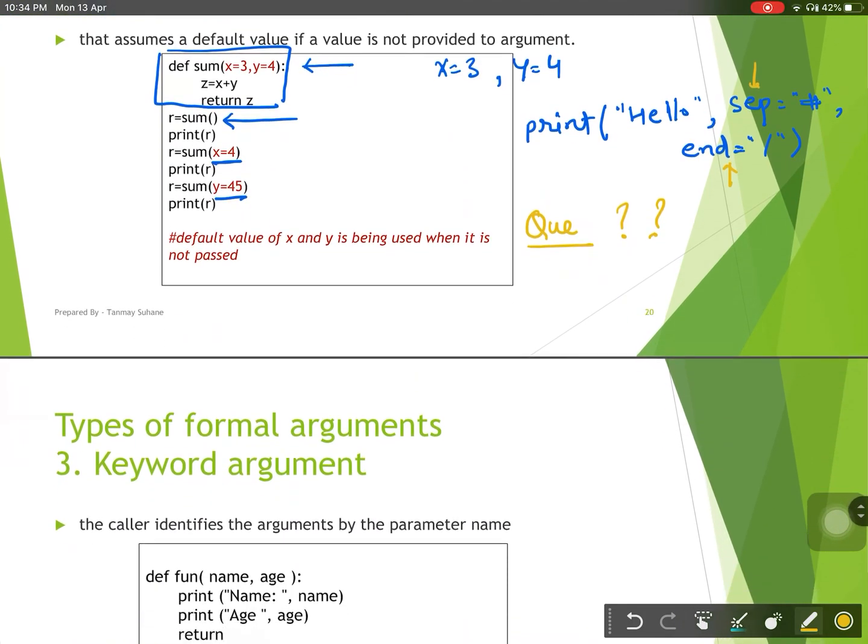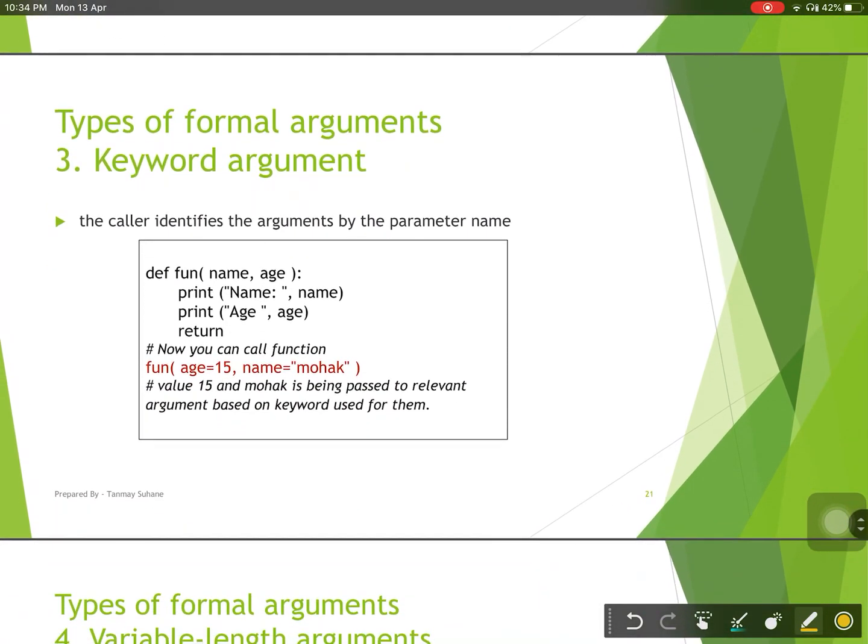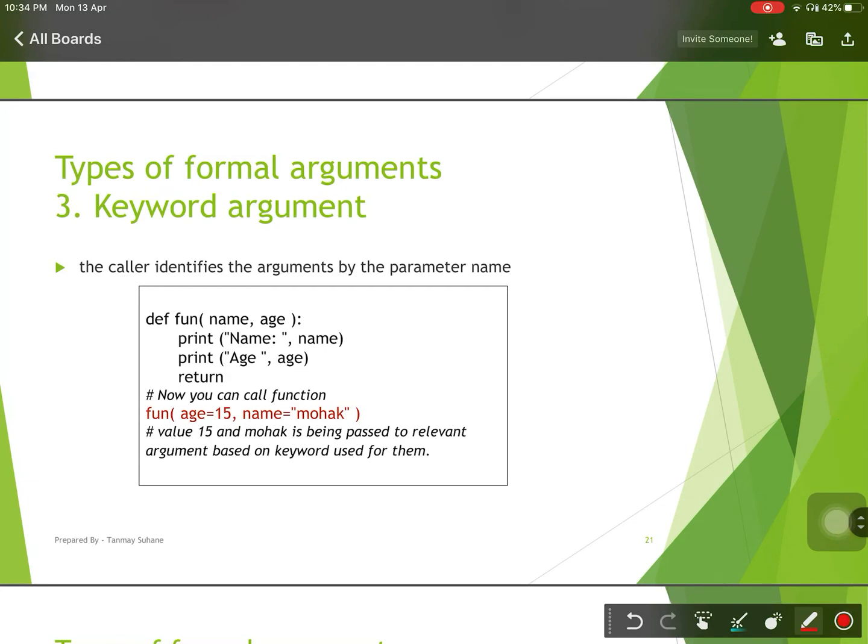Let us now discuss keyword argument. For some cases, we don't know the actual order of the arguments in which we should pass the argument. But we know the name of arguments. In this case, there are two arguments name and age.